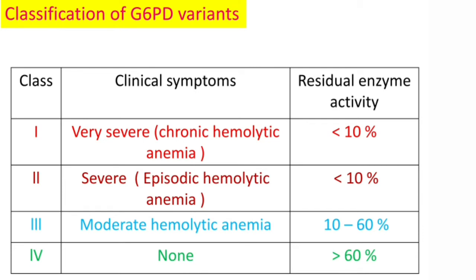Now coming to the classification of G6PD variants. As discussed, the gene coding for G6PD has 400 different mutations, forming different variants classified into four types. These are abnormal types where the affinity of glucose-6-phosphate dehydrogenase toward its substrate is decreased. Class 1 variants show very severe symptoms — chronic hemolytic anemia — and the enzyme activity is less than 10% of normal. Class 2 features severe episodic hemolytic anemia, also with enzyme activity less than 10%.